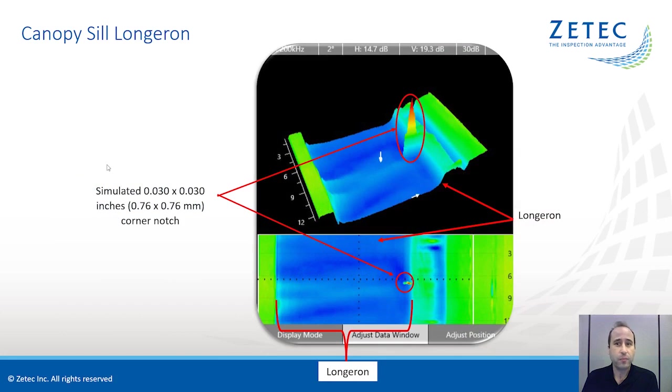So here's the data from the longeron with a simulated corner notch. This is the same corner notch that's used for calibrations in the NRK calibration block. You can see that the crack is easily identified and it is right at the edge of the longeron. Being at the edge of the longeron, it would be difficult to get this precise of a location from using crude probe stops.